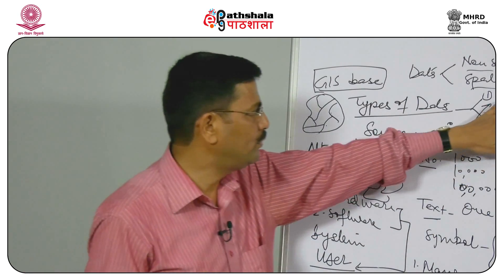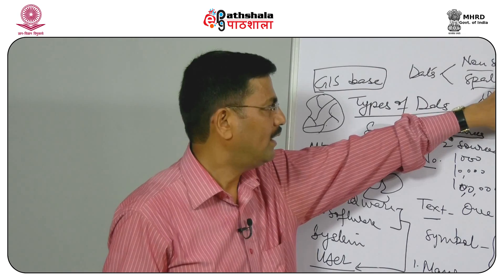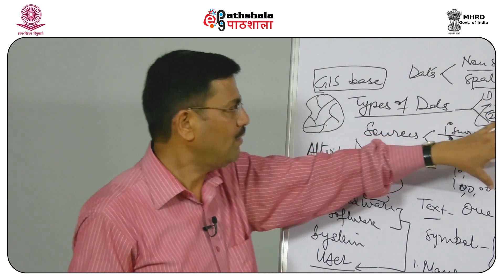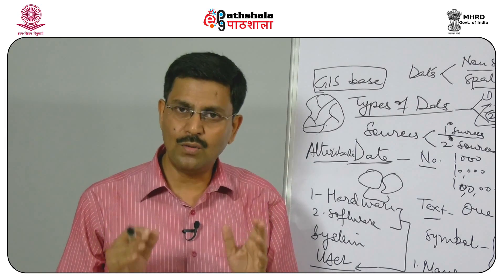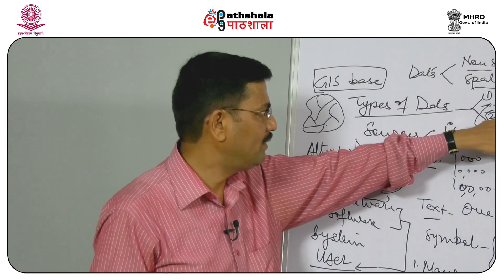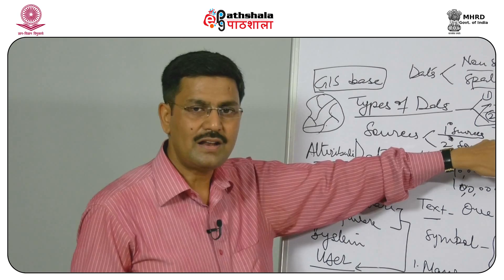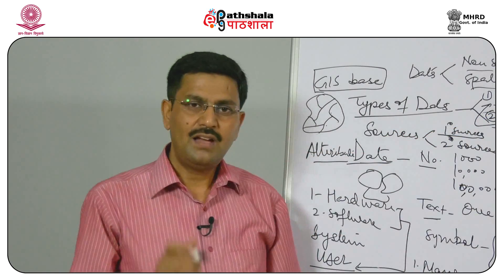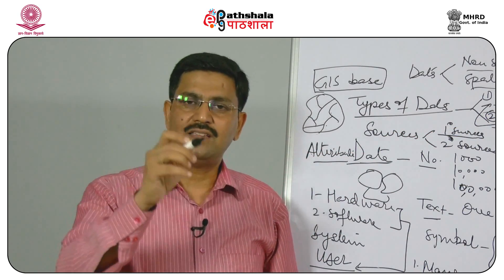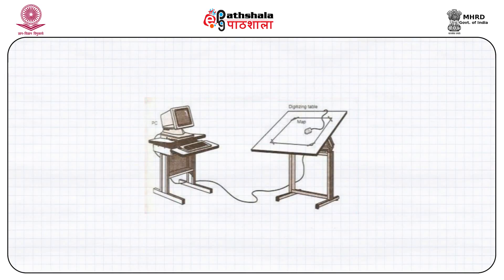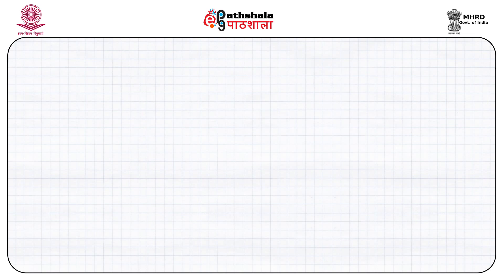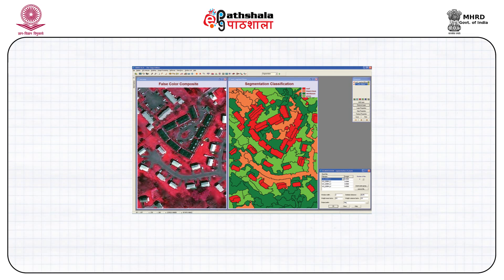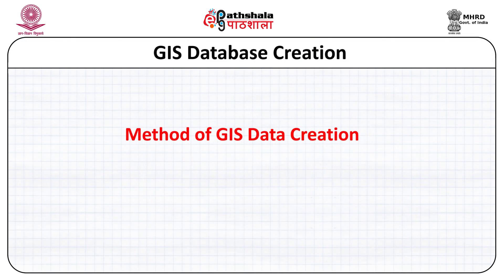Once we do that, it becomes a GIS database. To analyze and draw information, we can go both ways — either vectorize it or rasterize it. For vectorization, we simply go for manual digitizing. Through figures 3, 4, 5, and 6, I am trying to explain how we can create a vector database or raster database.